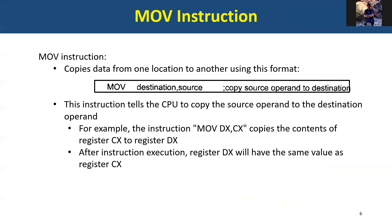Let's start with one assembly instruction called the MOV instruction. This is our first instruction, our first command in assembly language. MOV moves something from one place to another. The general form is: MOV, then the destination first, then a comma, then the source second. The source is always the second operand, the destination is always the first operand. It copies the source into the destination. For example, MOV DX, CX means copy what's in the CX register to the DX register. If CX has value 5 hex, then DX will also be 5 hex after the operation.